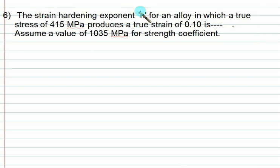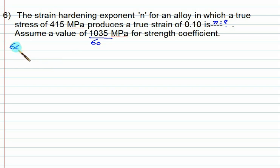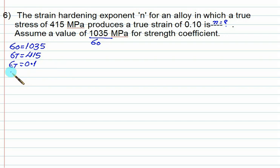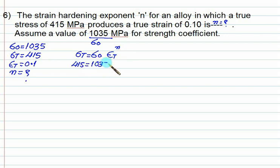Find the strain hardening exponent n for an alloy in which a true stress of 415 MPa produces a true strain of 0.1, given the strength coefficient sigma-0 equals 1035 MPa. Using the flow curve equation: true stress = sigma-0 × epsilon-t^n, we get 415 = 1035 × (0.1)^n. Solving this gives n ≈ 0.3969.